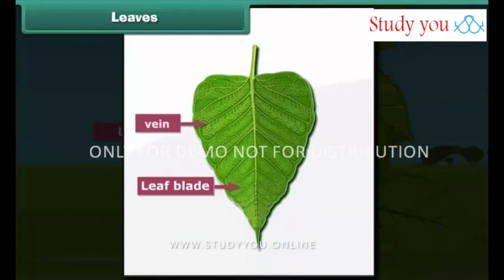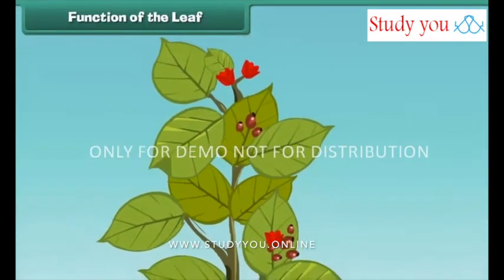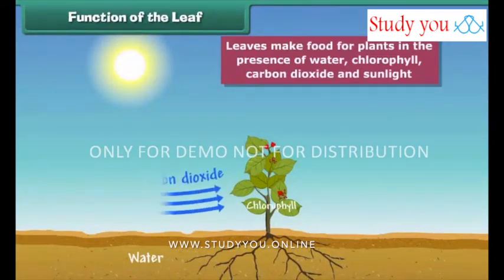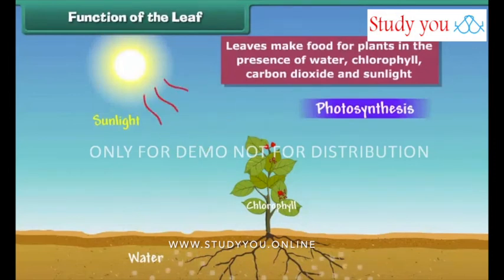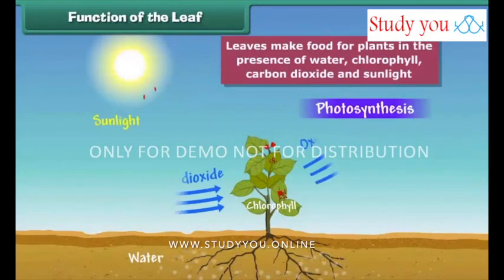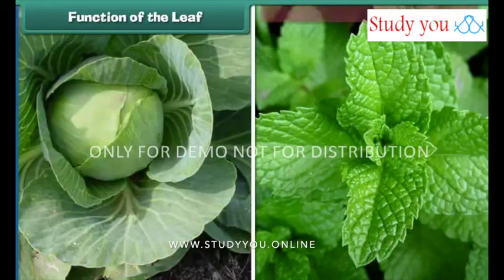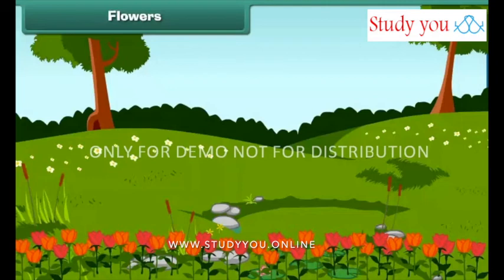Through these veins, water is circulated throughout the leaf. The main function of a leaf is to make food for the plant. For making food, leaves use water, chlorophyll, carbon dioxide, and sunlight — this process is called photosynthesis. In this process, oxygen is released, which all living things require for breathing. Some plants like cabbage and mint store food in their leaves, and we eat these leaves to get nutrition.